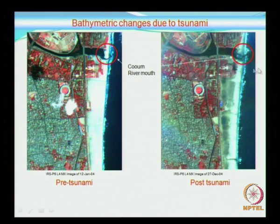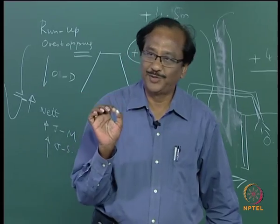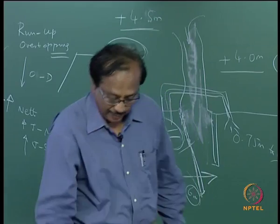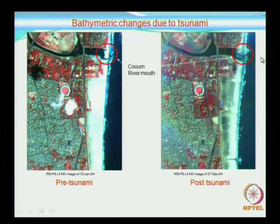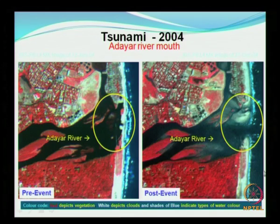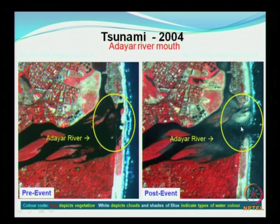During the tsunami, one of the good things that happened was that all the rivers or estuaries got opened. This is the Adaya river, which is south of Kuom. You can see the sandbar formation here, and the sandbar was removed by the ingress of the tsunami.